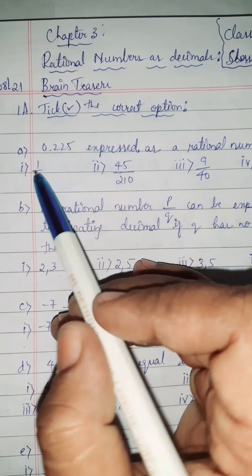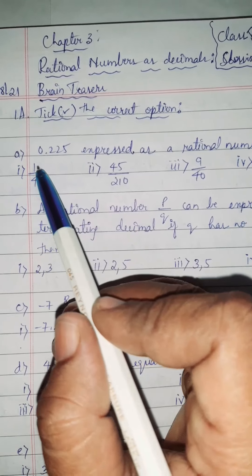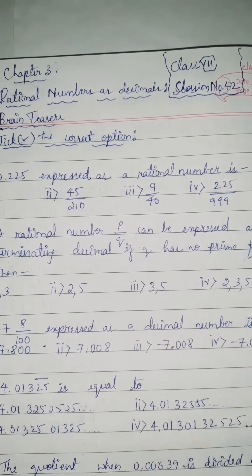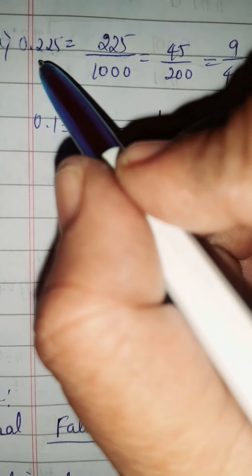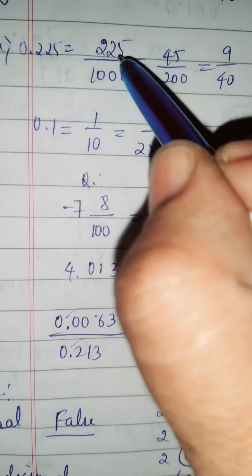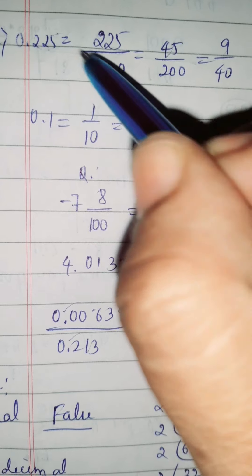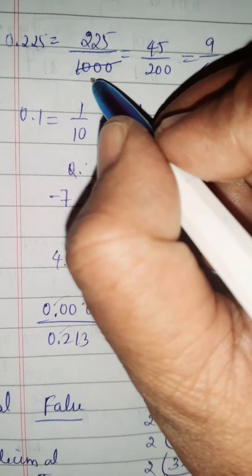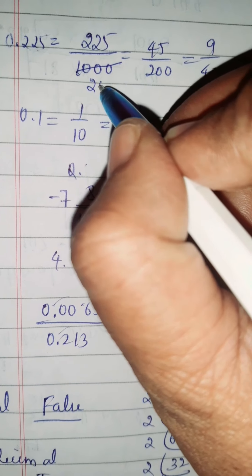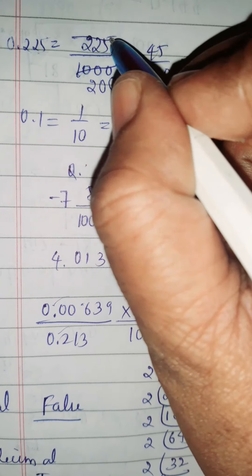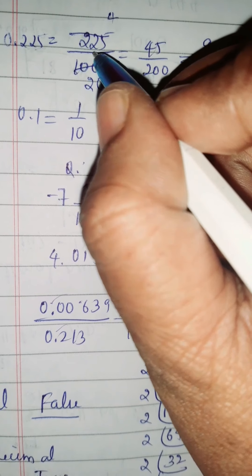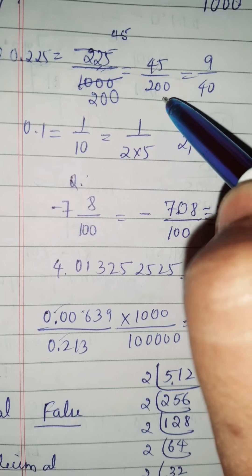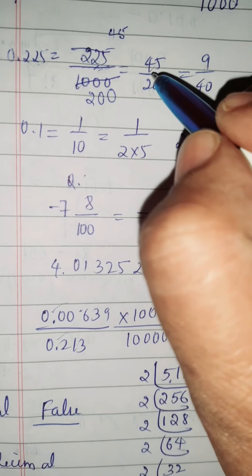Take the correct option. First question A is: 0.225 expressed as a rational number is. Here 0.225 is equal to 225 divided by 1000. We are going to divide with 5 table. 5 times 2 is 10, 2 zeros as it is, 5 times 4 is 20, 2 is left, 25, 5 times 5 is 25.